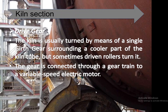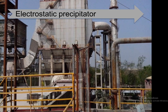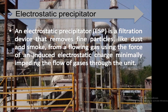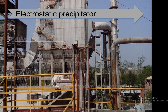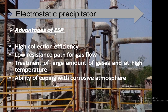An electrostatic precipitator (ESP) is a filtration device that removes fine particles like dust and smoke from a flowing gas using the force of an induced electrostatic charge, while minimally impeding gas flow. The advantages of an ESP include high collection efficiency, low resistance to gas flow, treatment of large amounts of gas at high temperatures, and the ability to cope with corrosive atmospheres.